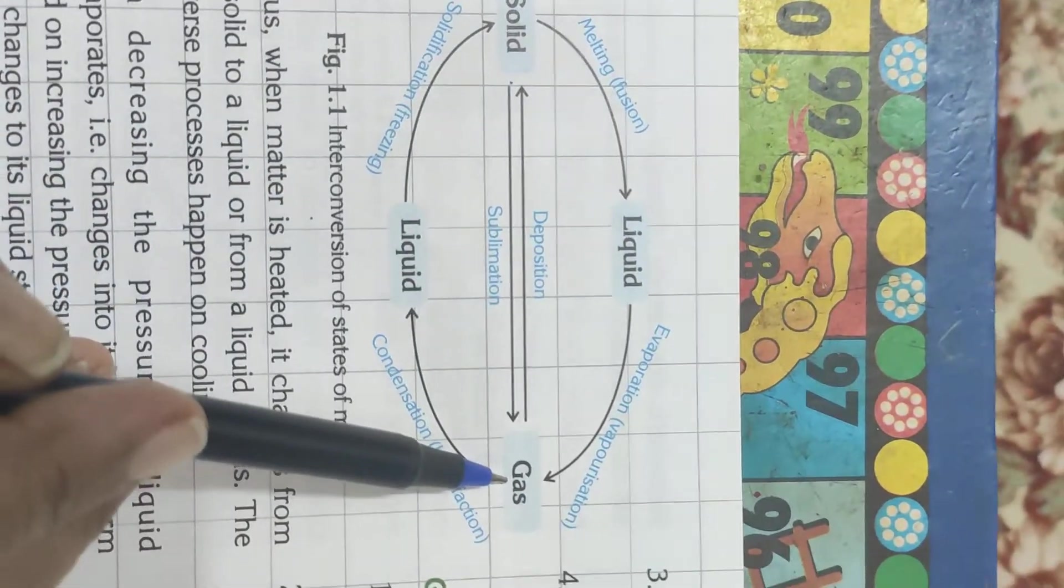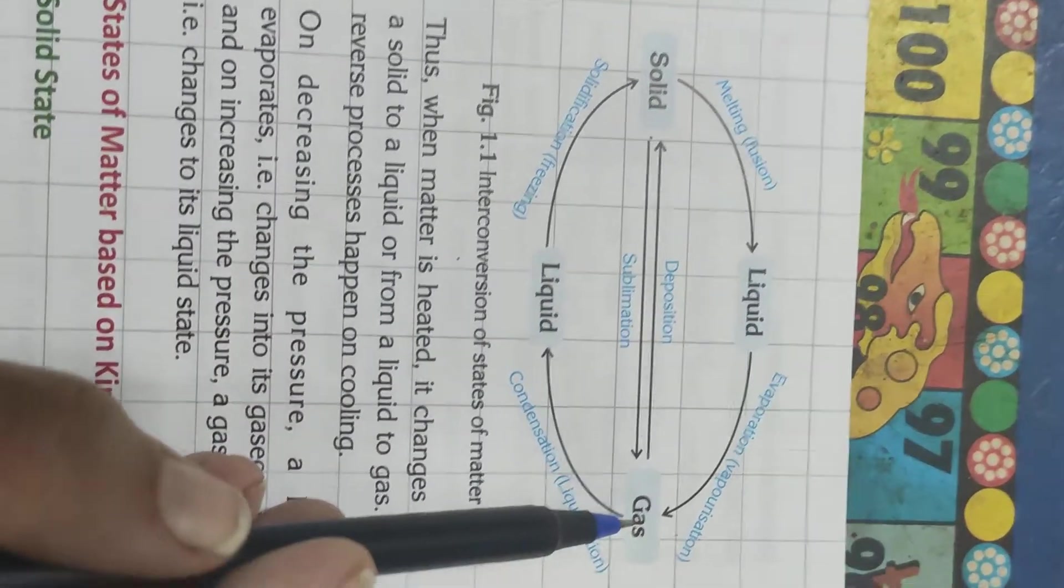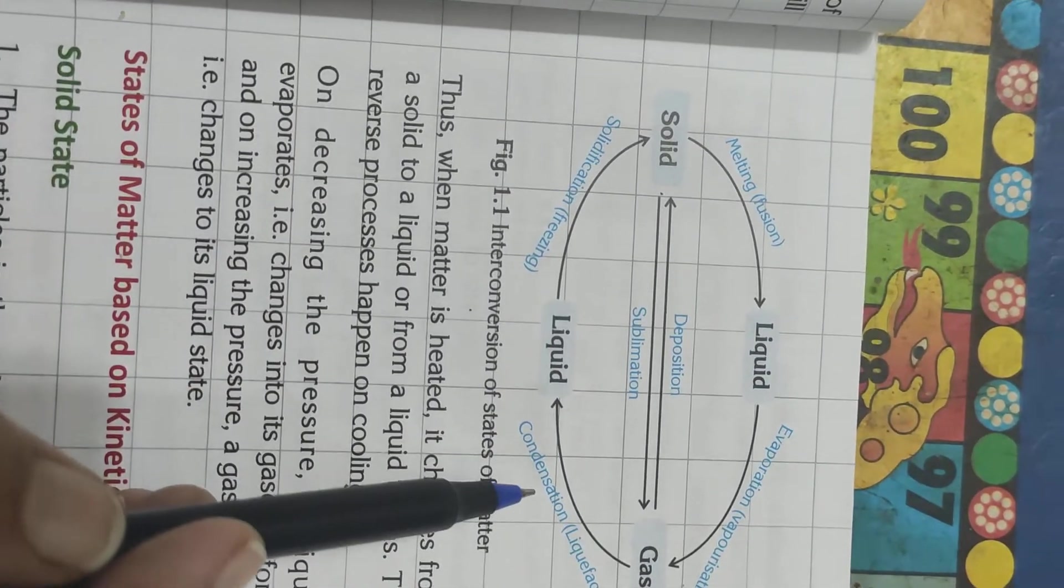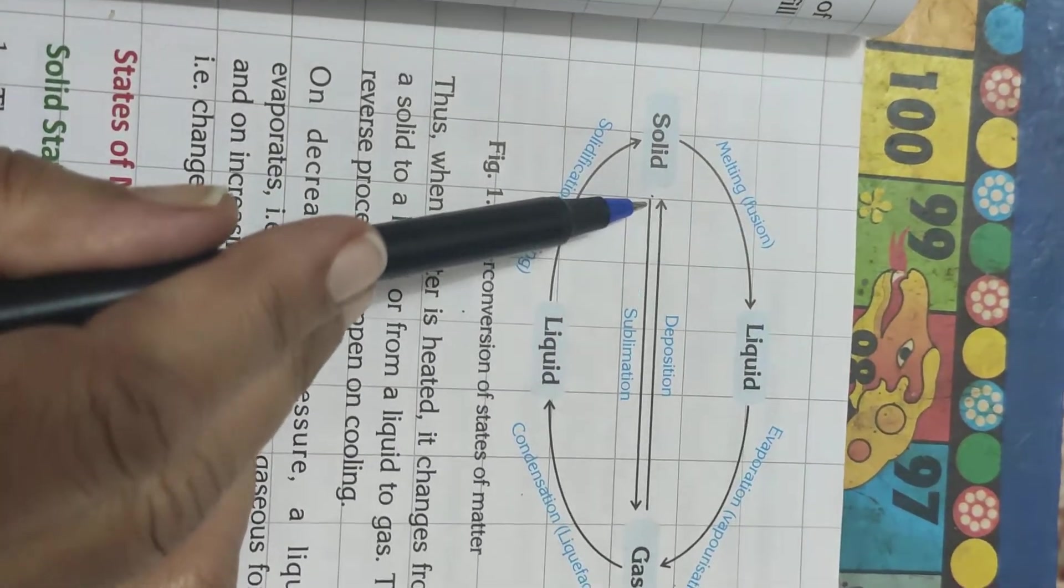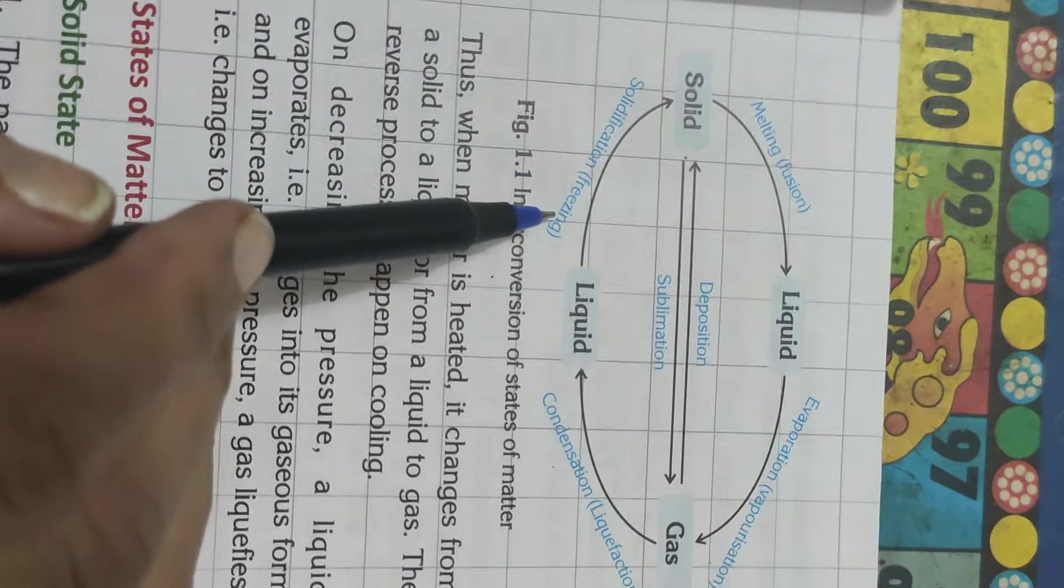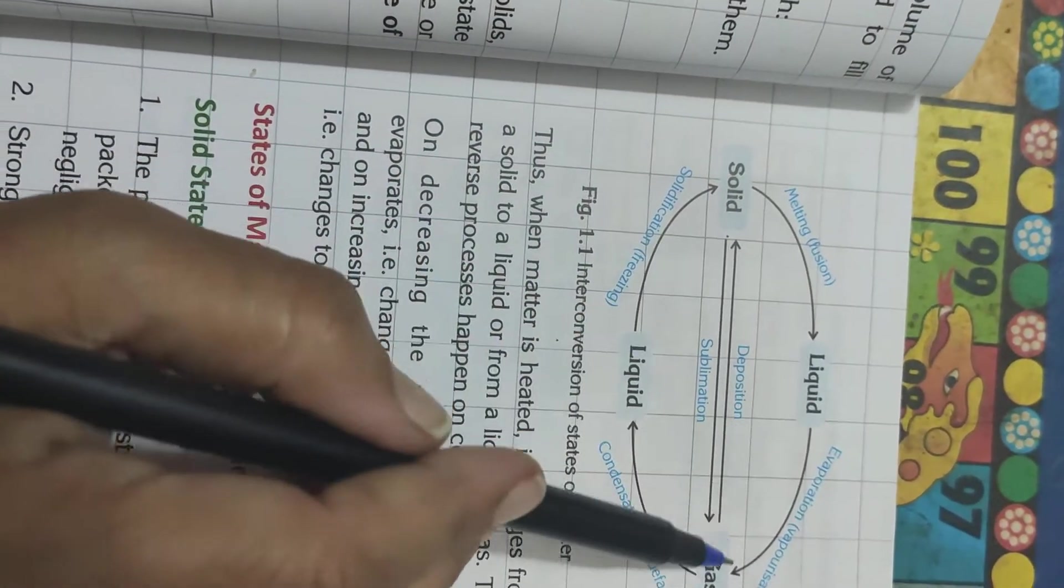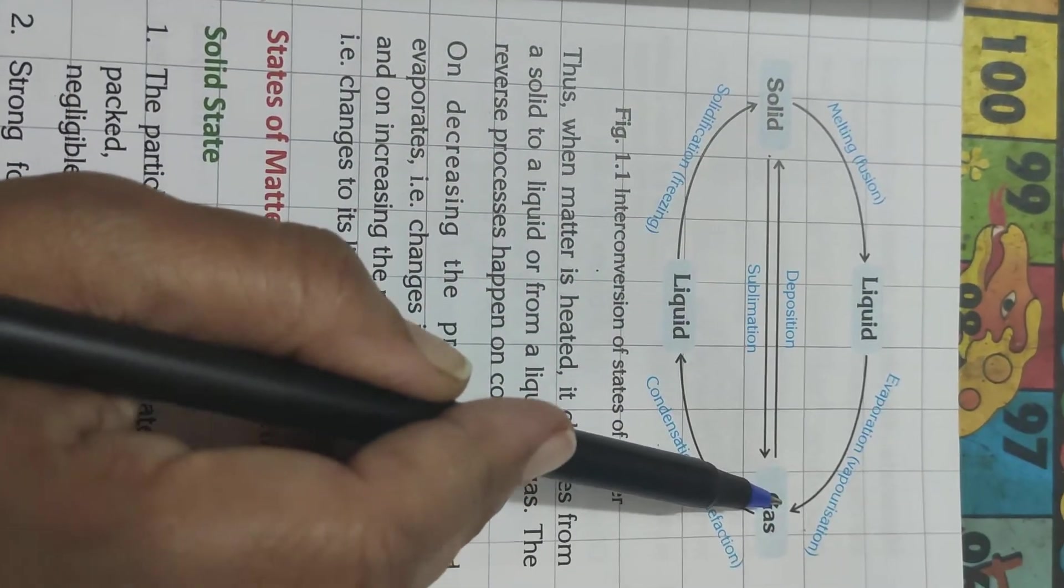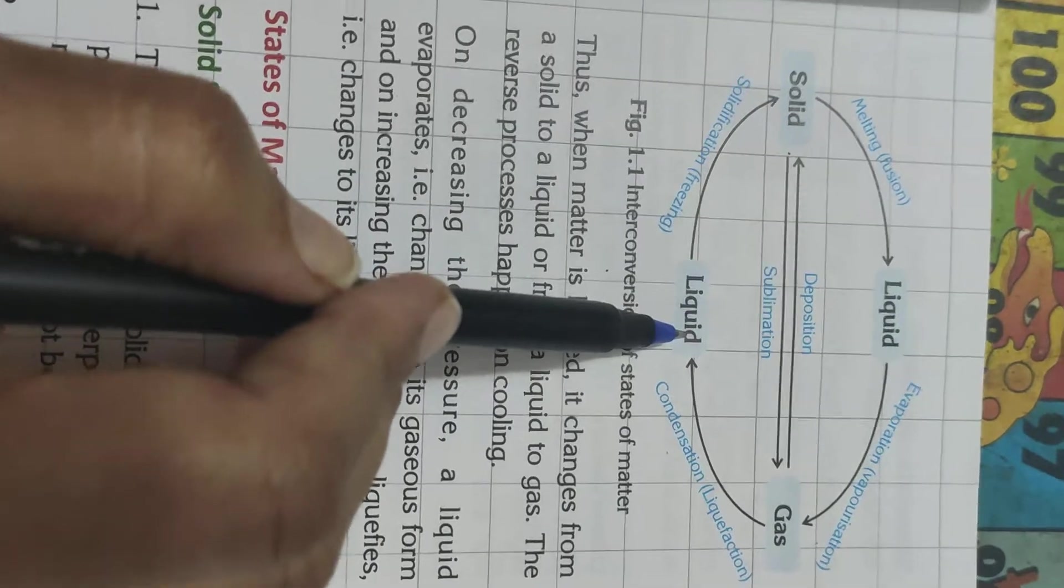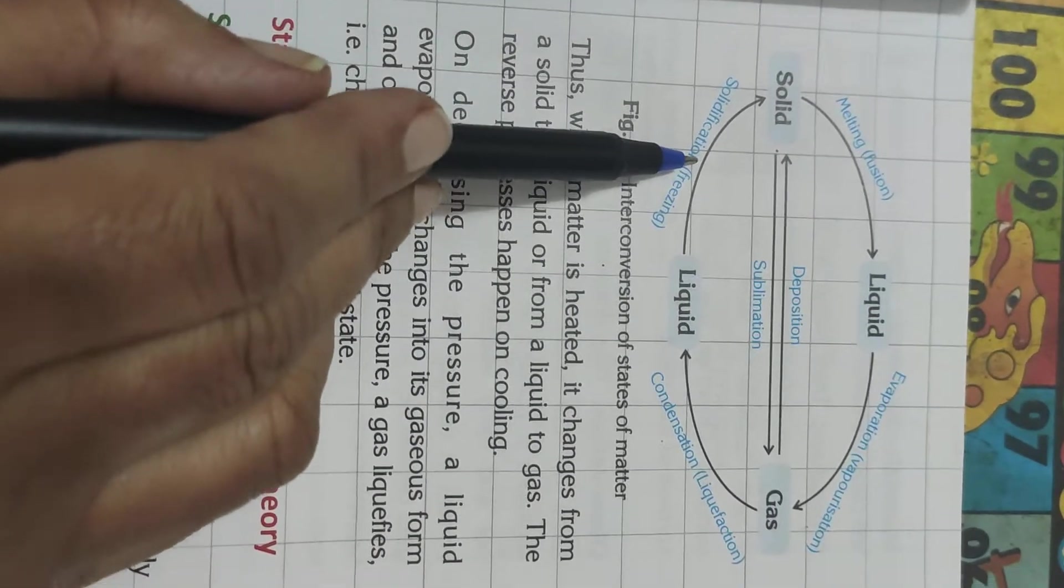From gas to liquid, condensation or liquefaction. And from liquid to solid, solidification or freezing. From solid to liquid and liquid to gas, we need to increase the temperature. From gas to liquid and liquid to solid, we need to decrease the temperature.